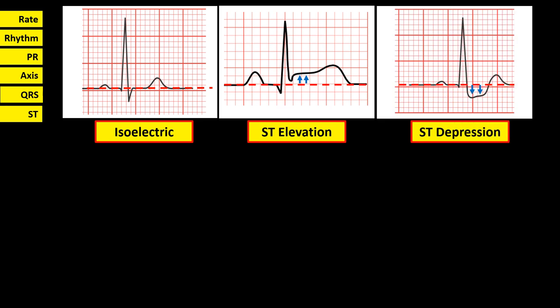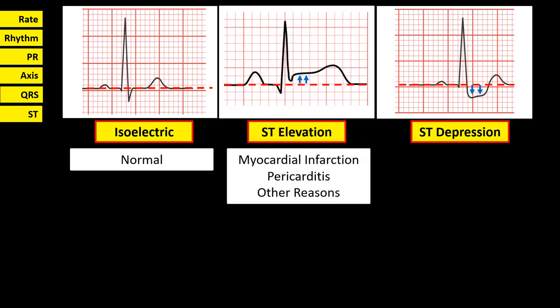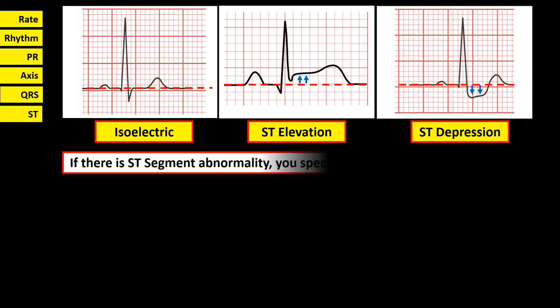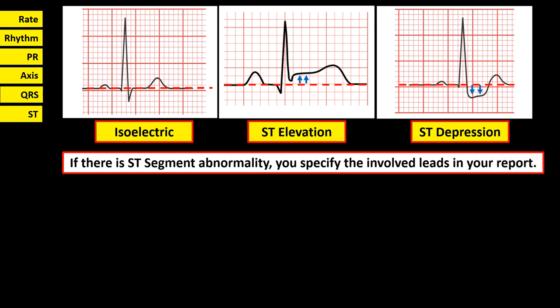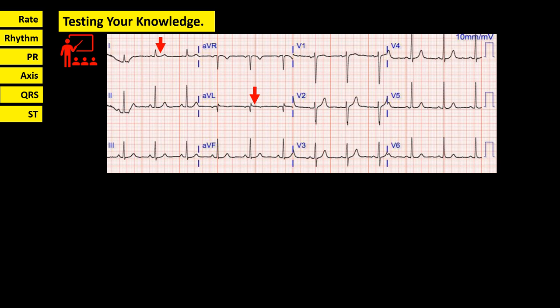After the QRS interval, the next step is to determine the ST segment — a short segment from the end of the S wave to the beginning of the T wave. ST segment can be reported as isoelectric (normal), elevated, or depressed. ST elevation might indicate myocardial infarction, pericarditis, and other reasons. ST depression might indicate myocardial ischemia, electrolyte imbalance, and other reasons. If any ST segment abnormality is found, specify the involved leads in your report. For example, in this tracing, looking at leads 1-AVL, 2-3-AVF, AVR, V1-V2, V3-V4, and V5-V6, there are neither elevation nor depression, so report ST segment as isoelectric.